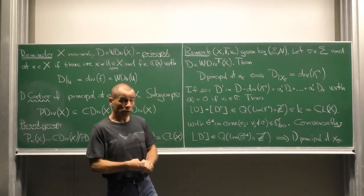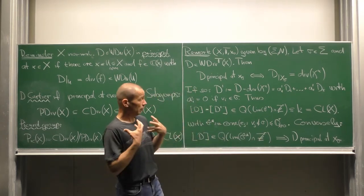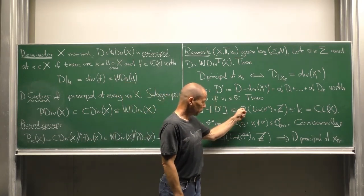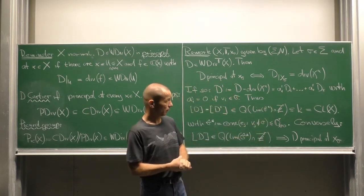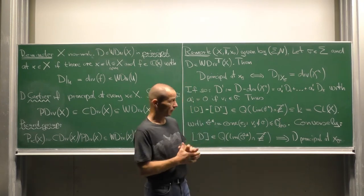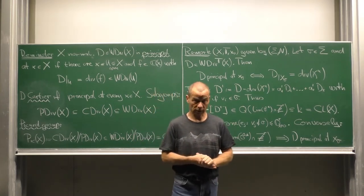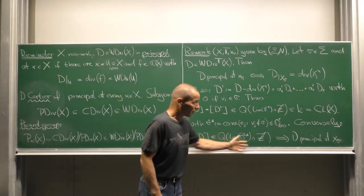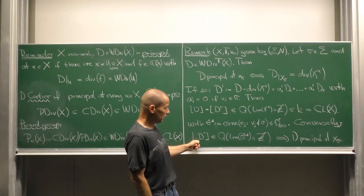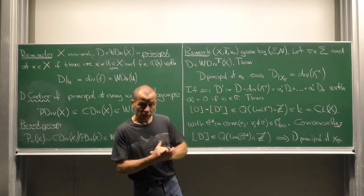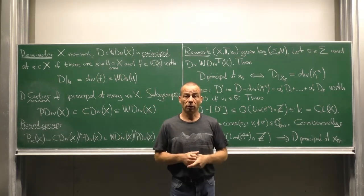Then by this property of the vector a 1 prime up to a r prime the class of D' lies in the image of q of the linear subspace generated by sigma hat star intersected with the orthant. So we have located the class of D' in the divisor class group. This argument runs also the other way around. That means D lying in this part of the divisor class group characterizes D being principal at the limit point x sigma.